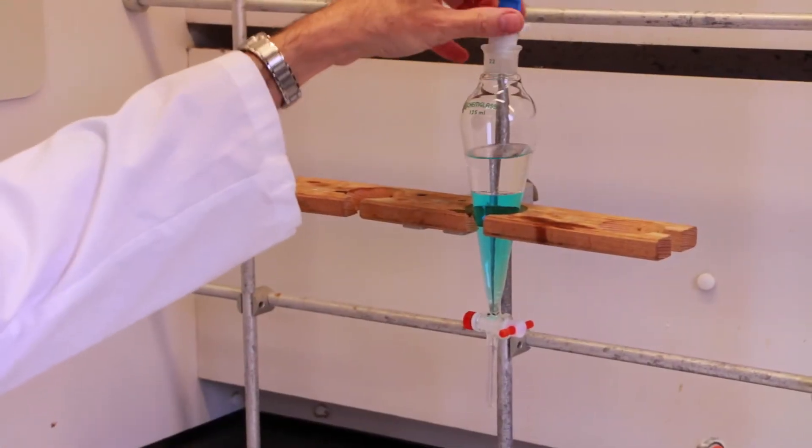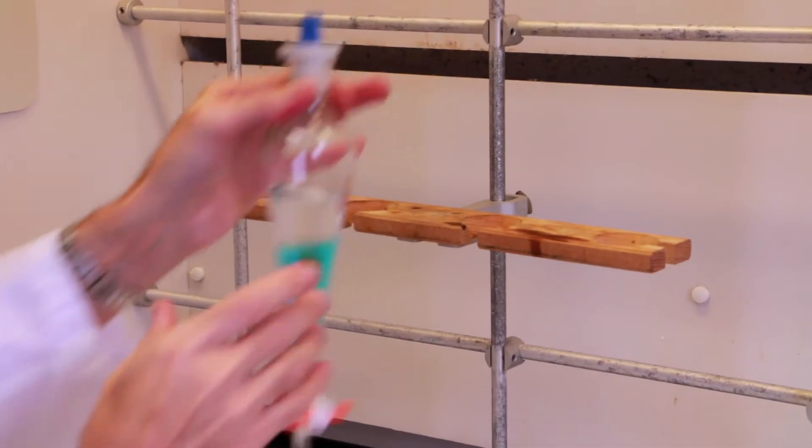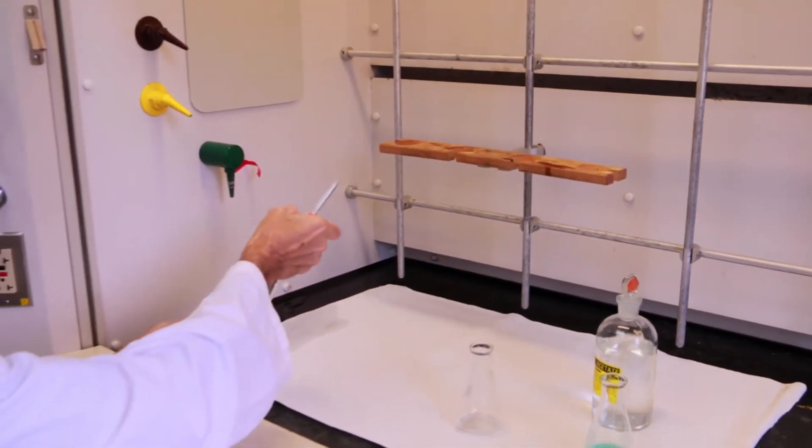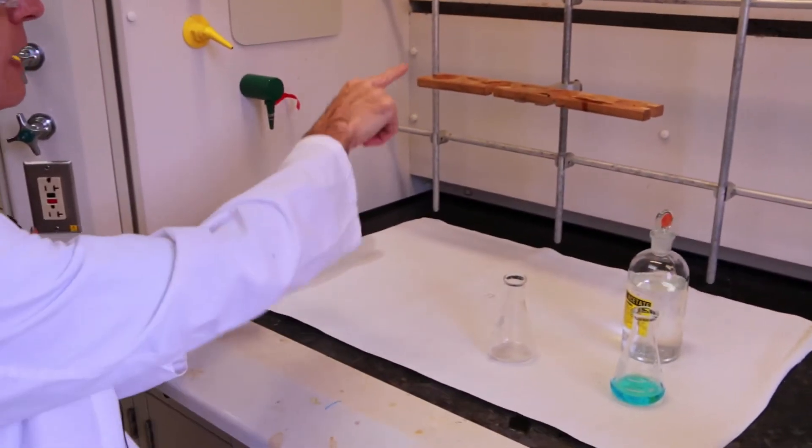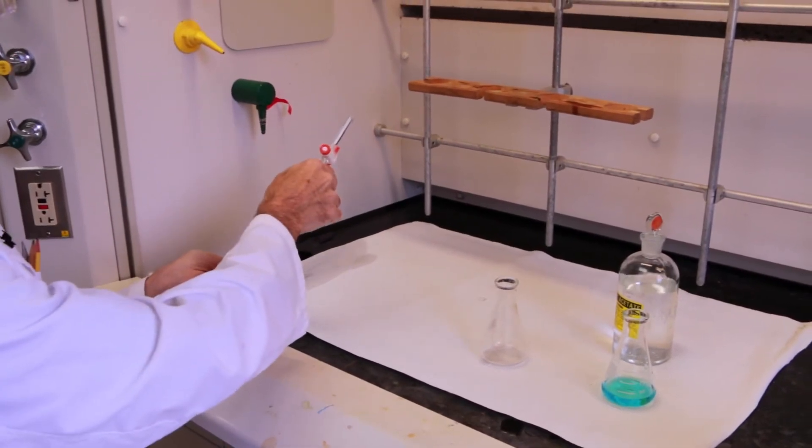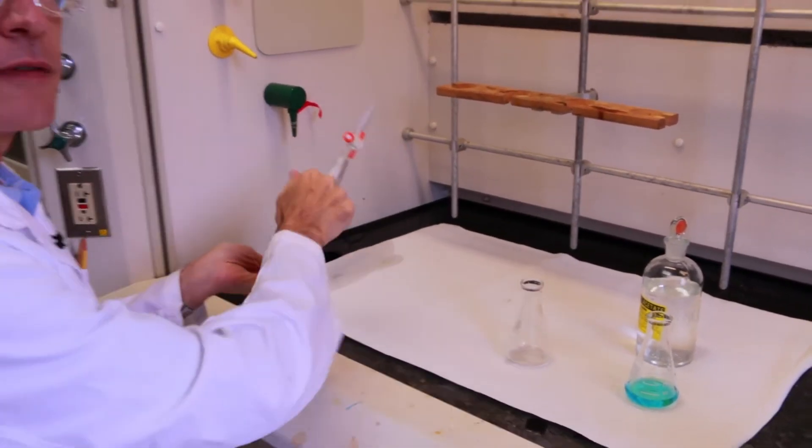Then you put a stopper on it. You grab it and the first thing you do is you vent it. You want to vent it inside the hood away from people because very often it spits at you.